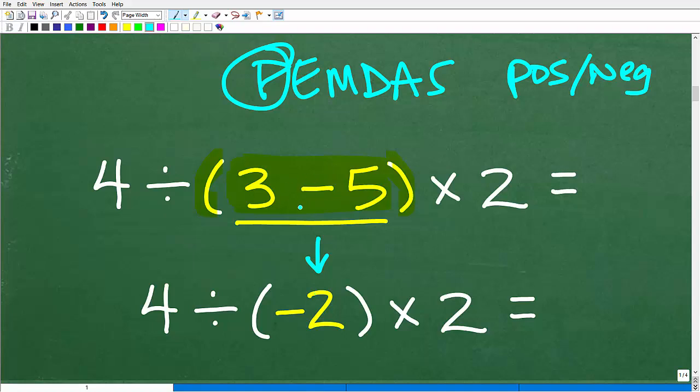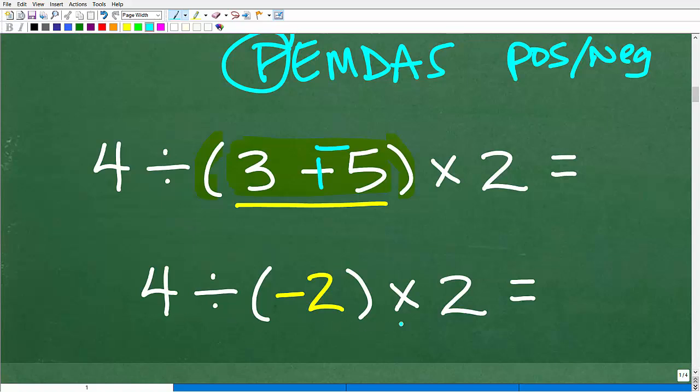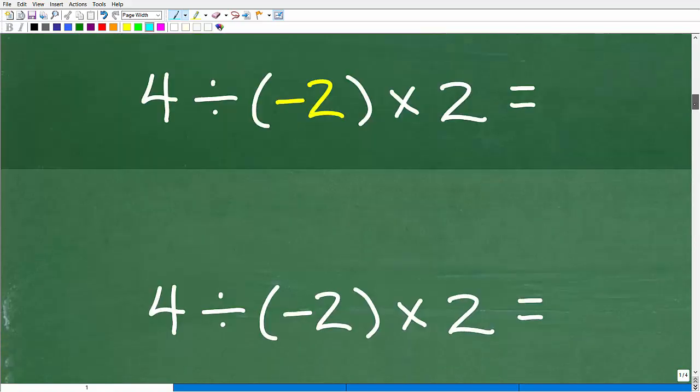But anyways, three minus five is negative two. All right? So three minus five is the same thing as three plus negative five. So this now is our problem. Okay, we have four divided by negative two times positive two. Okay, so what's the next step?